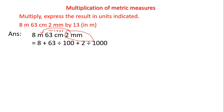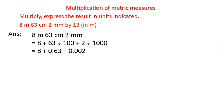So 8 meters stays as 8. 63 divided by 100 gives 0.63. 2 divided by 1000 gives 0.002. We already studied how to divide any number by 100 and 1000 in previous videos. Now we add these three numbers, starting from the lowest place value to the highest.